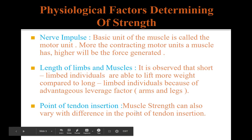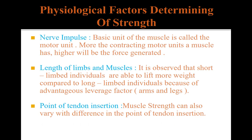Our next point is point of tendon insertion. Muscle strength can also vary with differences in the point of tendon insertion. For example, let us presume that two individuals have the same arm and muscle length. However, the first individual's bicep tendon is attached to their forearm further from their elbow joint than the second individual. This gives the first person a biomechanical advantage and they can lift more weight in bicep exercises.